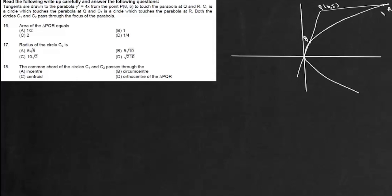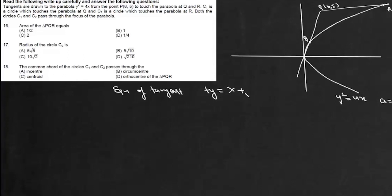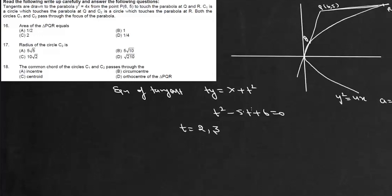First, we find Q and R. For this parabola y² = 4x, the value of a is 1, so the equation of tangent is ty = x + at², which becomes ty = x + t². We need this tangent to pass through (6,5), so substituting x = 6 and y = 5 gives t² - 5t + 6 = 0, so the values of t are 2 or 3.